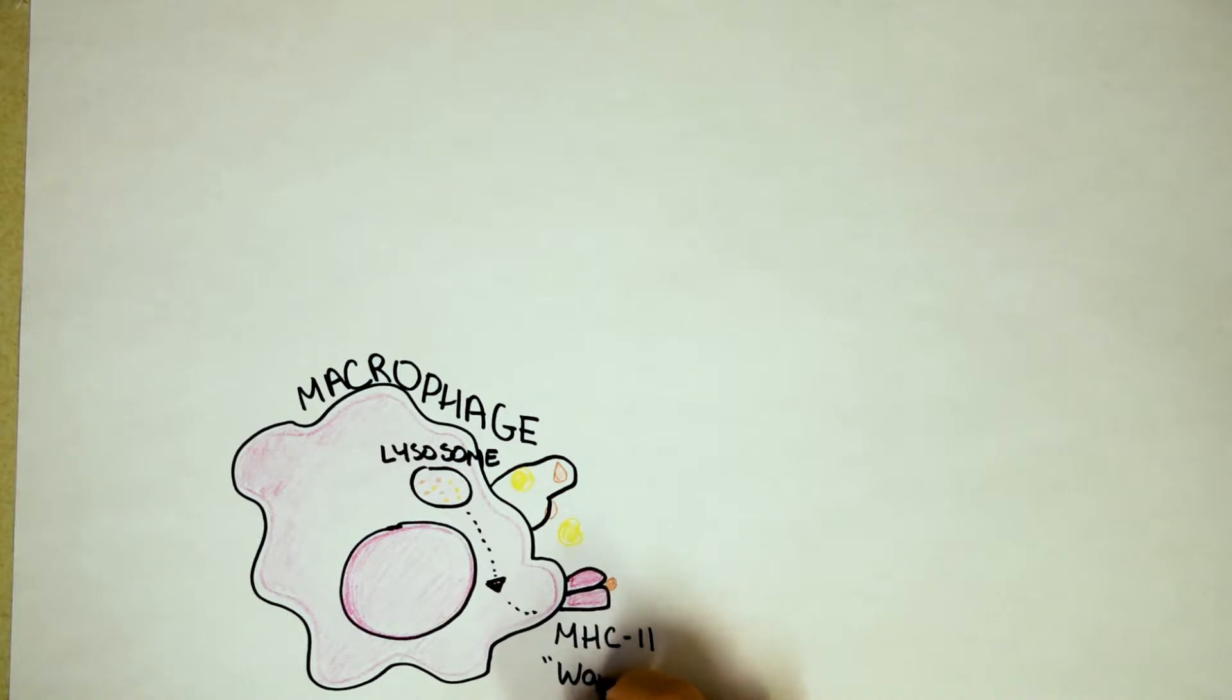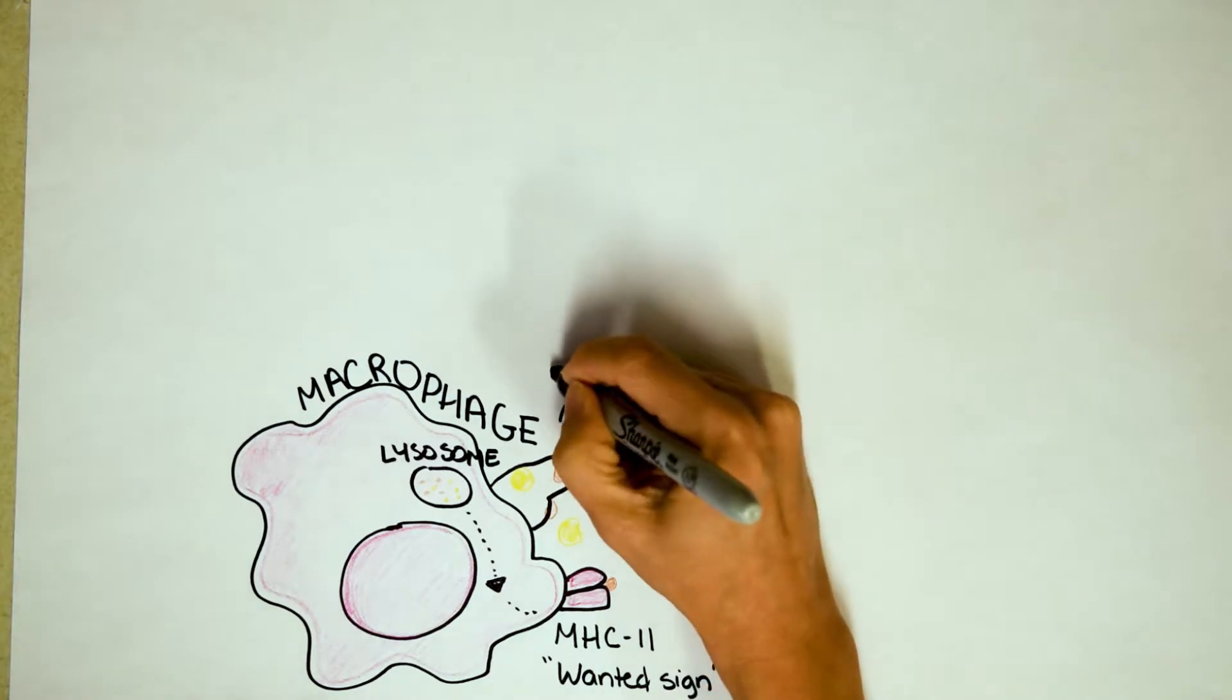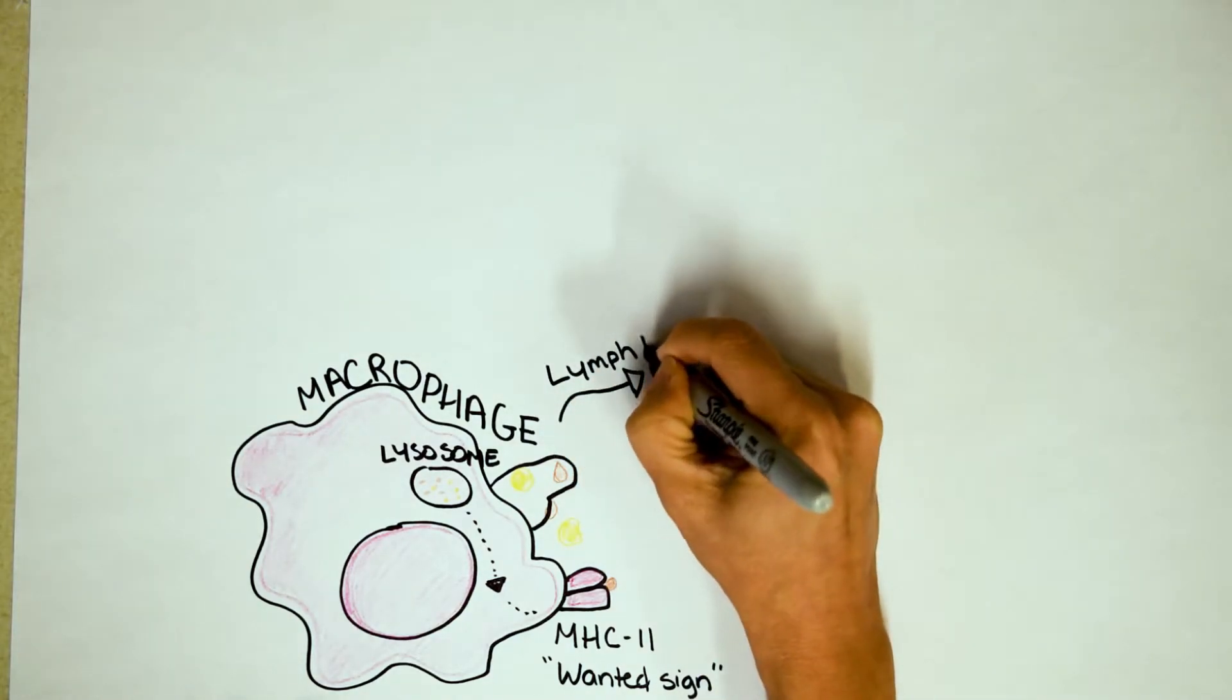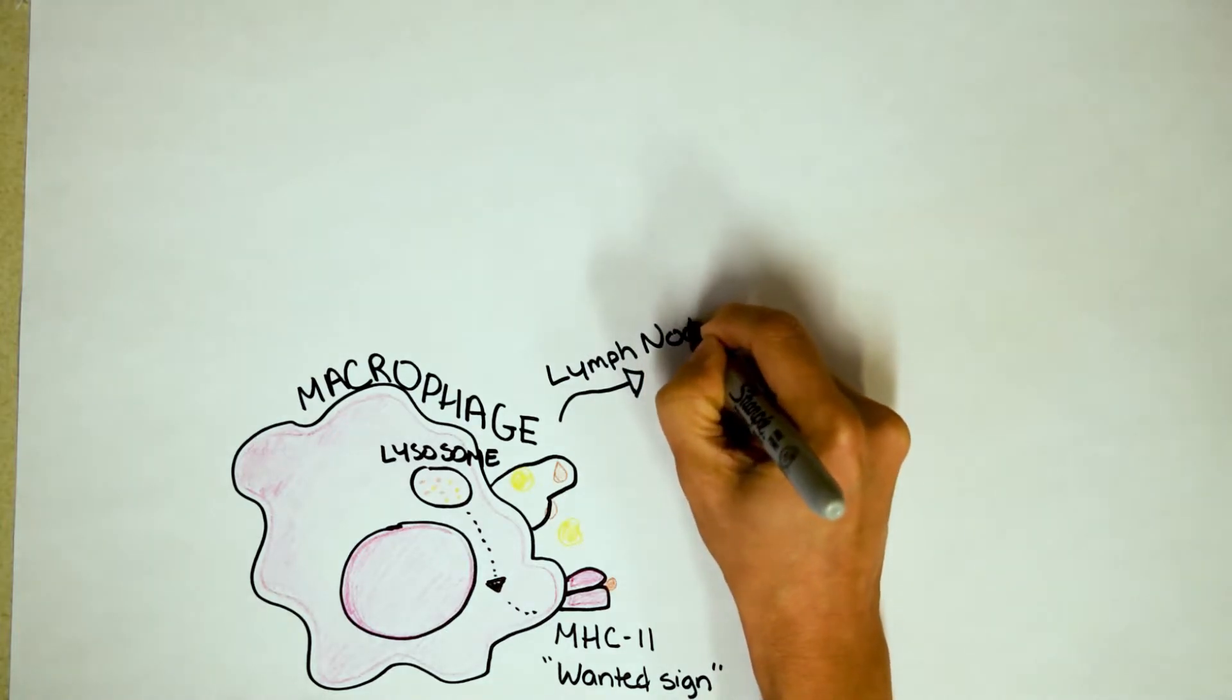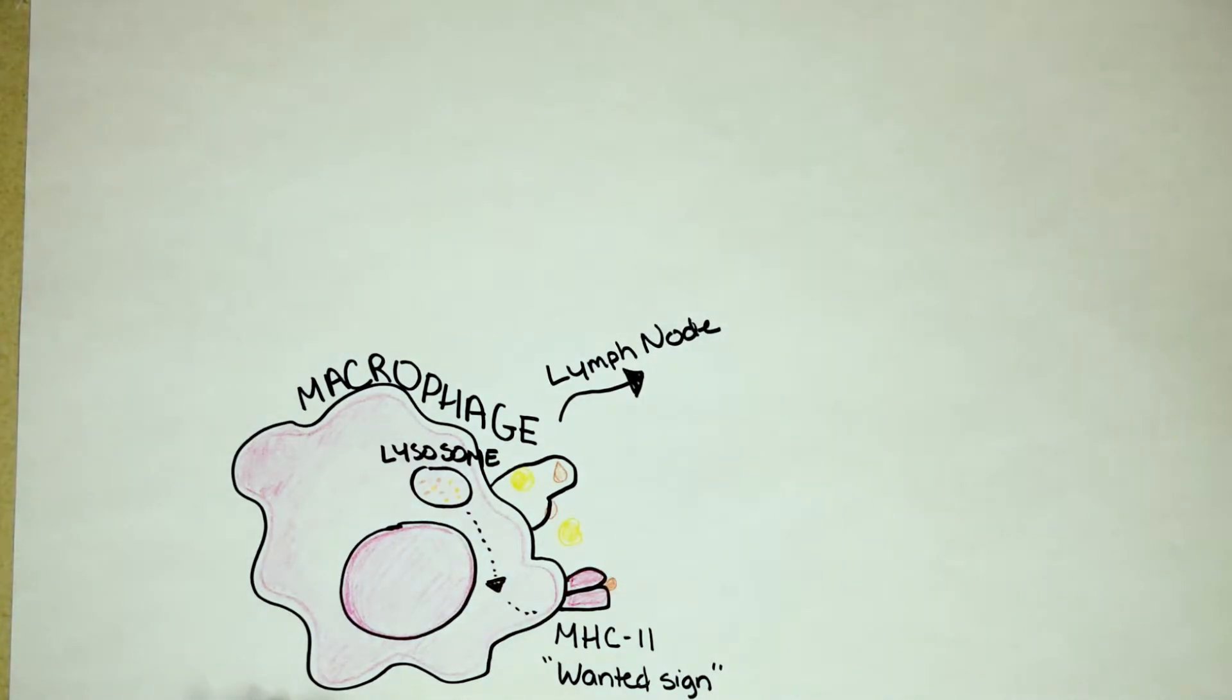So they're going to go see if this profile fits any of the wanted signs on the rest of your body. Alright, so it's actually going to travel just a little ways to a lymph node. Now a lymph node is where most of your long-lived immune cells are. Your long-lived immune cells are B cells and T cells.